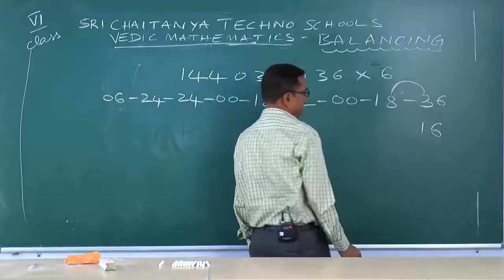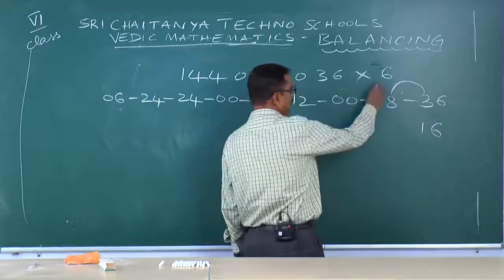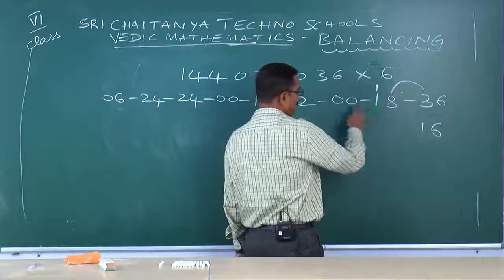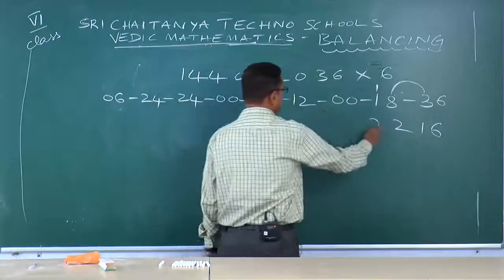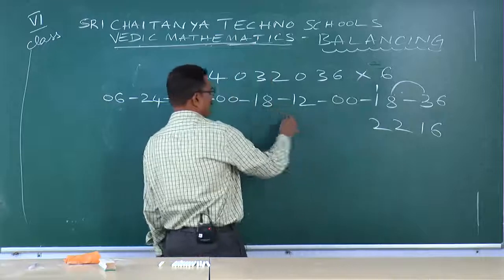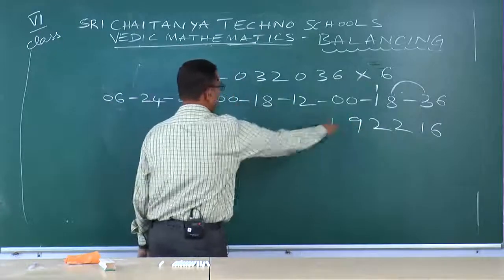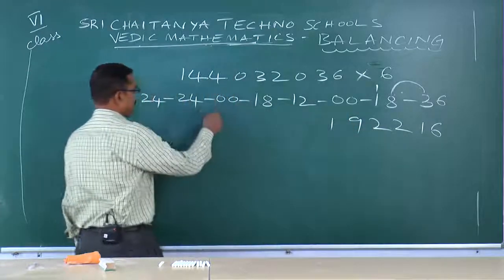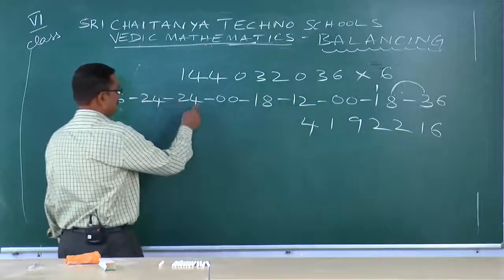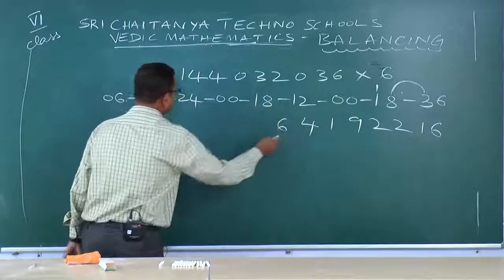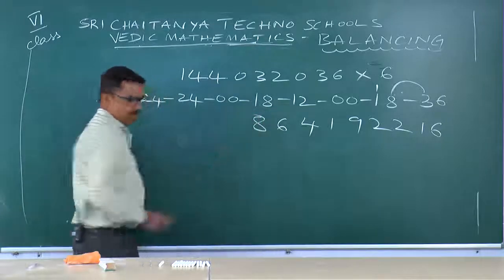3 plus 8: 11. 1 comes out, 1 is carried forward. 2 plus 0: 2. 0 plus 2: 2. 1 plus 8: 9. 1 plus 0: 1. 0 plus 4: 4. 2 plus 6, 2 plus 6: 8.